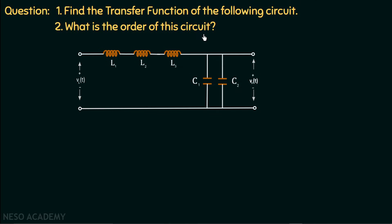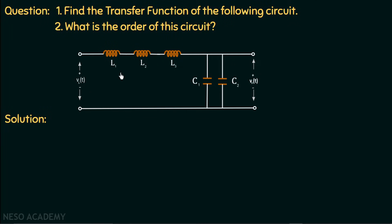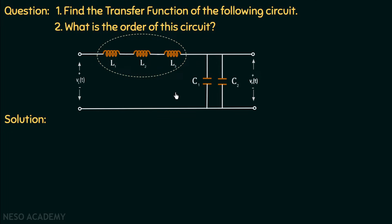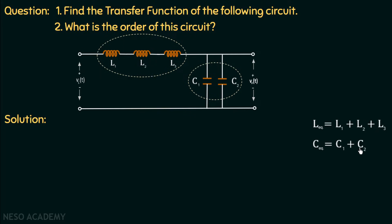Moving on to the solution: in this circuit we have three inductors connected in series and two capacitors connected in parallel. When inductors are connected in series, the equivalent inductance is the sum of all inductances: L_eq = L1 + L2 + L3. When capacitors are connected in parallel, the equivalent capacitance is the sum of all individual capacitances: C_eq = C1 + C2.